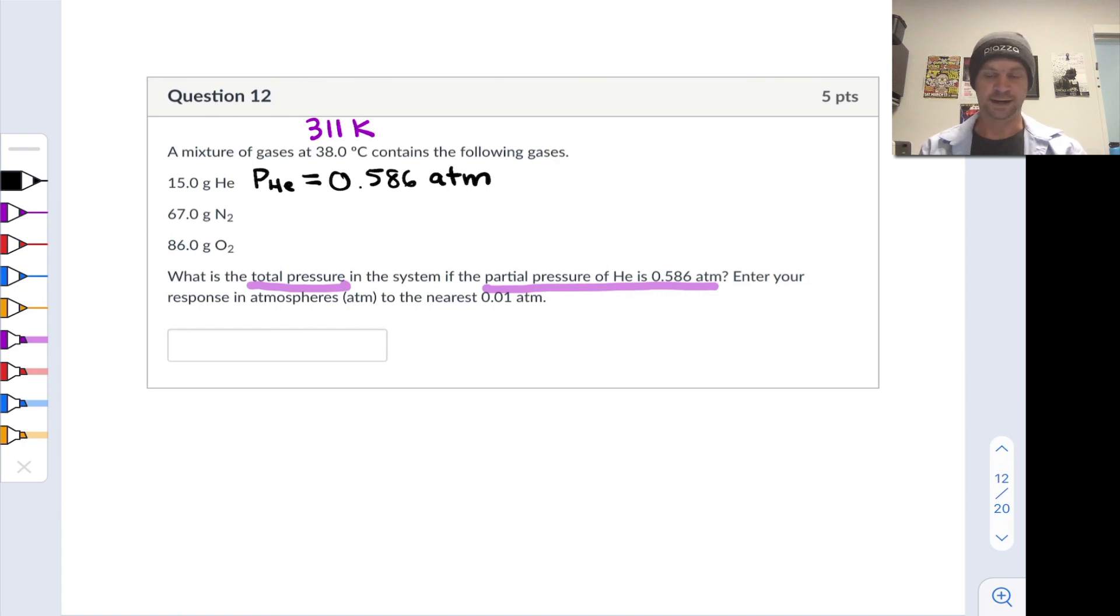What we want to find are the remaining two partial pressures. We want to find the partial pressure of N2 and O2, then use Dalton's law and add the three up to find the total pressure. The total pressure is simply the partial pressure of helium, which we know is 0.586 atmospheres, plus the partial pressure of N2 plus the partial pressure of O2.